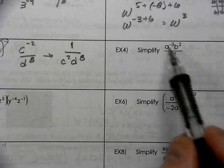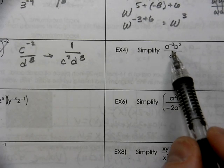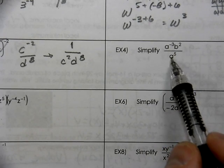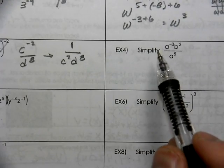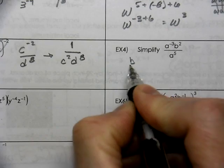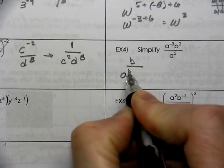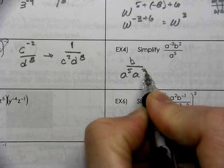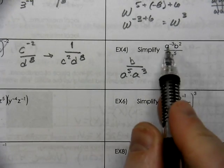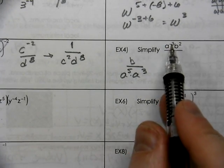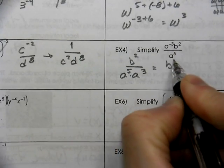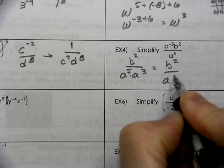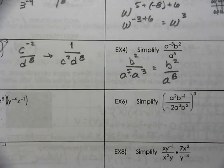Simplifying here, there are a couple of different ways to think about it. The bases are the same so you could subtract exponents, or because it's a negative exponent, you can bring it to the bottom. Because you brought a to the third to the bottom, we now have 8 a's on the bottom — 5 plus 3 is 8.